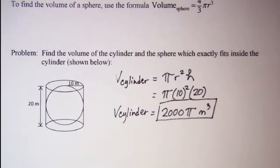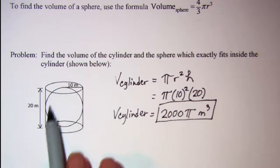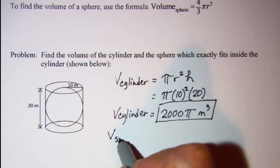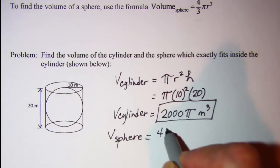Now we want to find the volume of the sphere that's just exactly inside of the cylinder. So the volume of our sphere is 4 thirds pi r cubed.